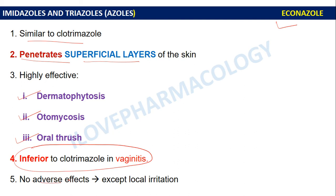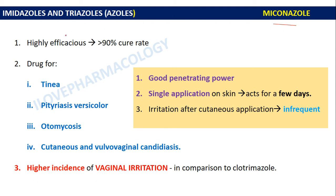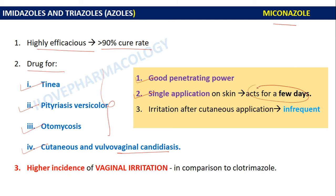Miconazole is a highly efficacious imidazole providing a 90% cure rate. It is used for tinea infections, pityriasis versicolor, otomycosis, cutaneous and vulvovaginal candidiasis. Because of its good penetration power, it can be used as a single application on skin and will act for several days due to its longer duration of action. Cutaneous irritation is infrequent, but there is a higher incidence of vaginal irritation compared to clotrimazole.